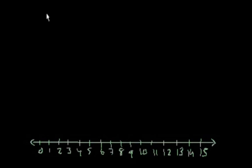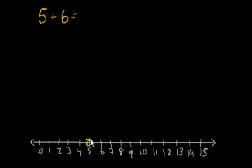Now we have to add 5 plus 6 using the number line. I will mark 5 on the number line, then count on 6 more: 1, 2, 3, 4, 5, 6. So, 5 plus 6 is equal to 11.